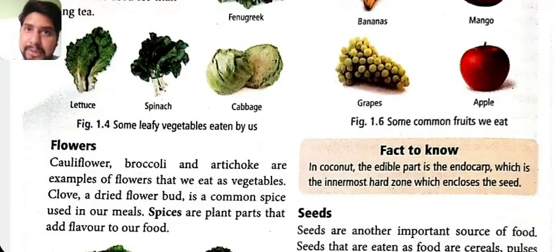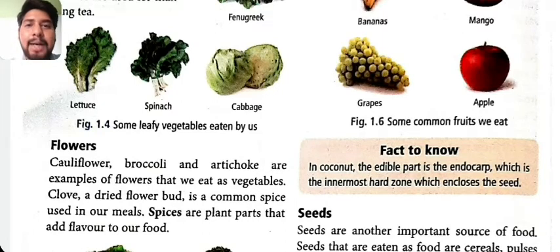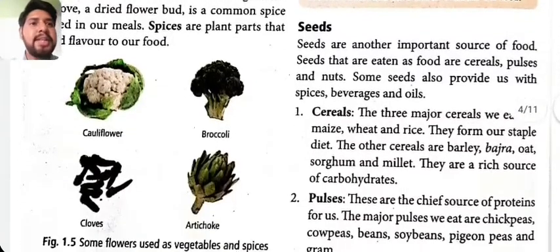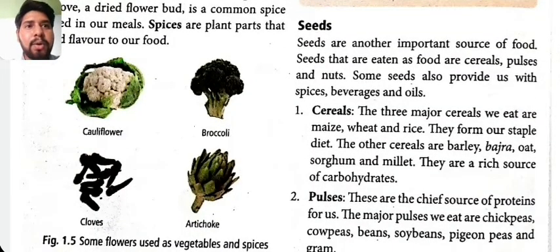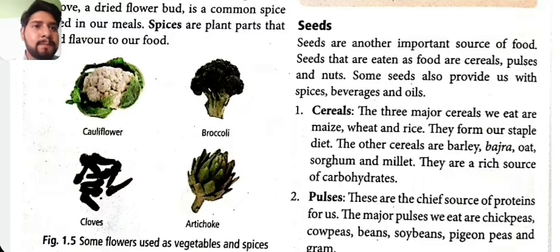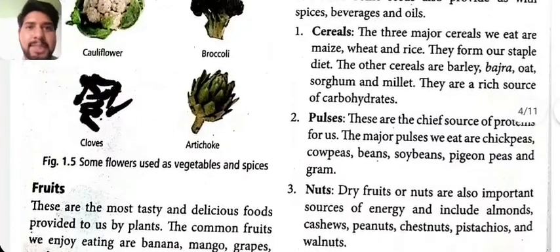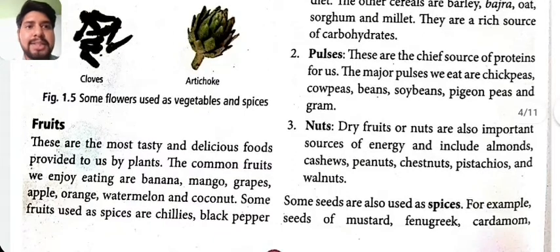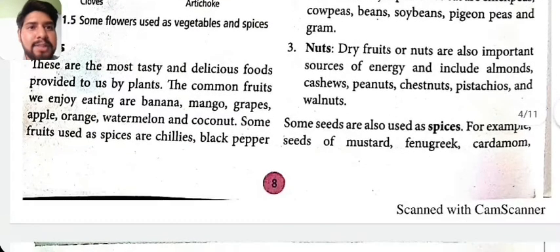Fact to know: in the coconut, the edible part is the endocarp, which is the innermost zone enclosing the seed. Seeds are also a very important source of food. Cereal seeds include barley, bajra, oats, maize, wheat, and rice. Pulses include chickpeas, beans, soya beans, and gram. Nuts and dry fruits are sources of energy: almonds, cashews, peanuts, and walnuts.